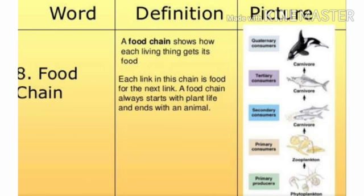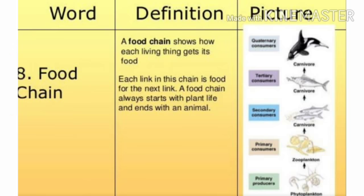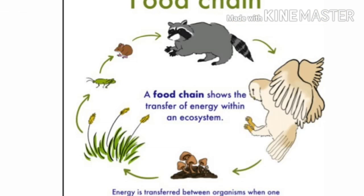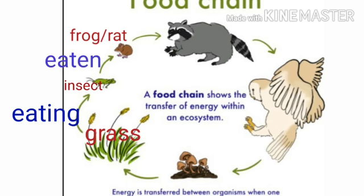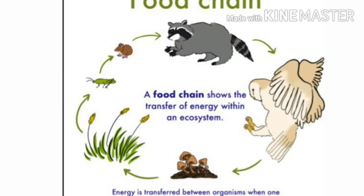This sequence of one organism eating another and passing on the energy is called a food chain. A food chain shows the food relationship that exists between plants and animals, where one living thing is consumed by another. It is a diagram showing what animal eats what — the process of eating and being eaten — and it comprises a unidirectional flow of energy.